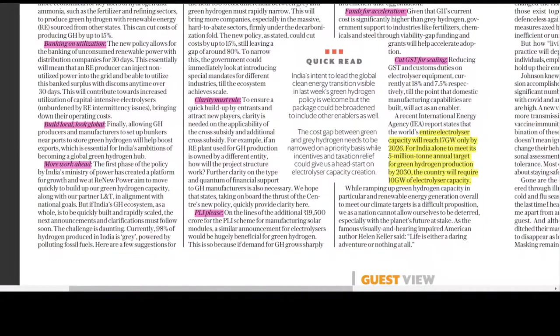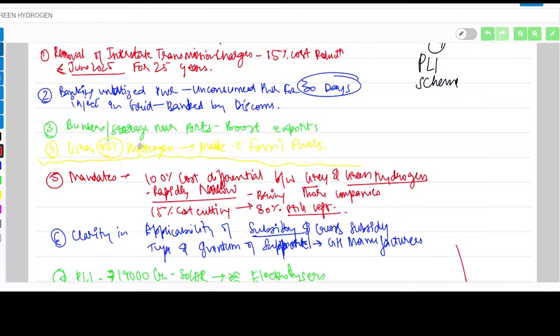Third is build local, look global. The government has allowed functioning and storage of green hydrogen near ports, which would help in exports.